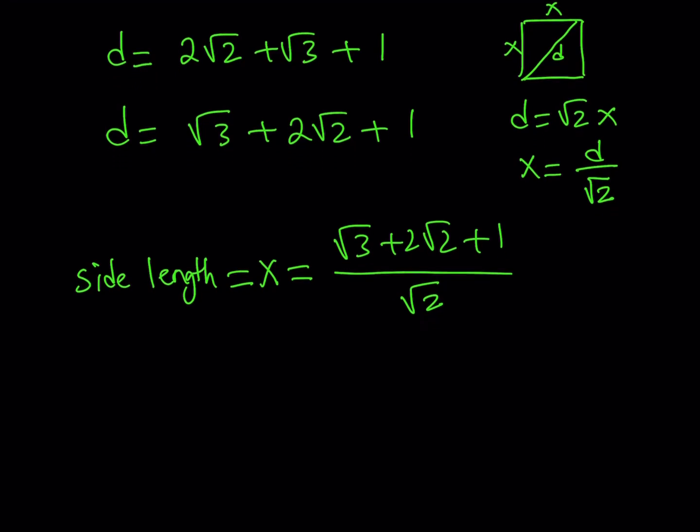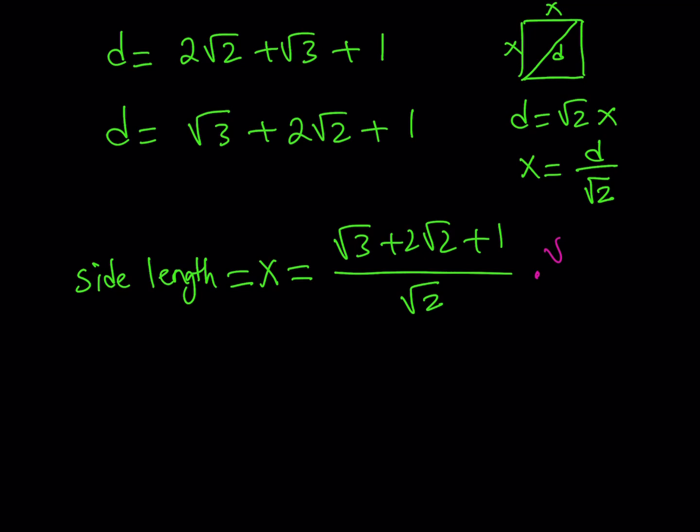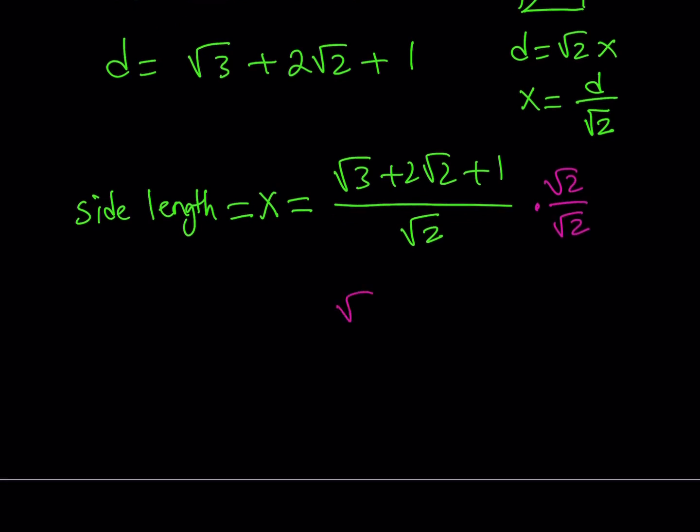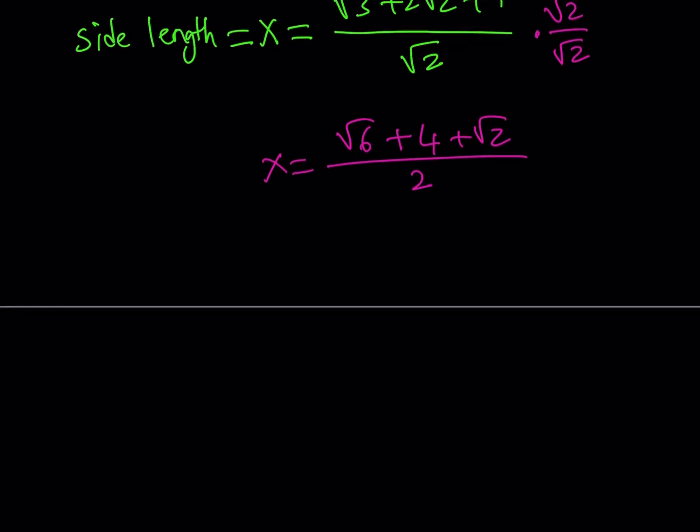But let's go ahead and simplify this a little bit for simplicity's sake. And I'm going to multiply this by root 2 over root 2. That's going to give me root 6 plus 2 times root 2 times root 2 is going to be 2 times 2, which is equal to 4 plus root 2 over 2. And then you can basically write this in the simplest form. Let's go ahead and write the root 6 first and then the root 2 next and the number last. So that's our answer for the side length of the square.